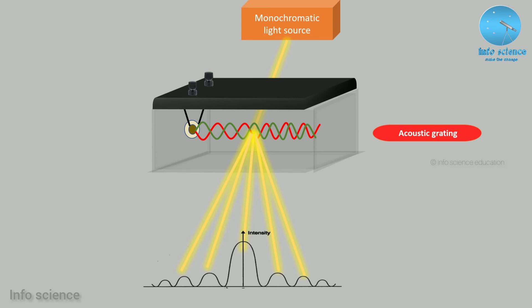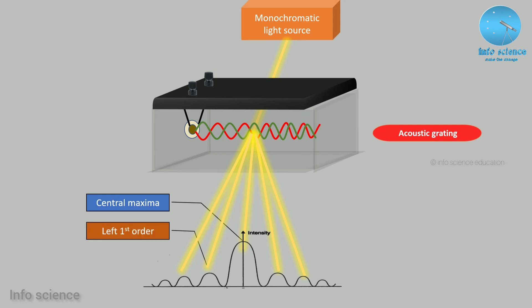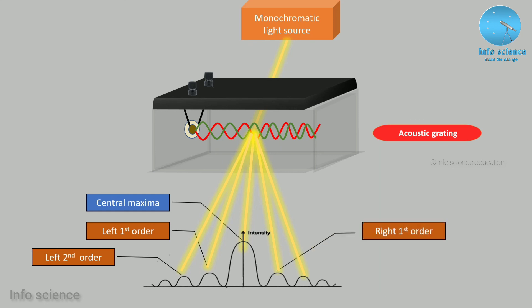The center is the central maximum and has the highest brightness. The first order maxima are the next brightest. The second order maxima follow. The third order is the highest liquid. For the acoustic grating, this is the central maximum, then the left first order, left second order, right first order, and right second order maxima.